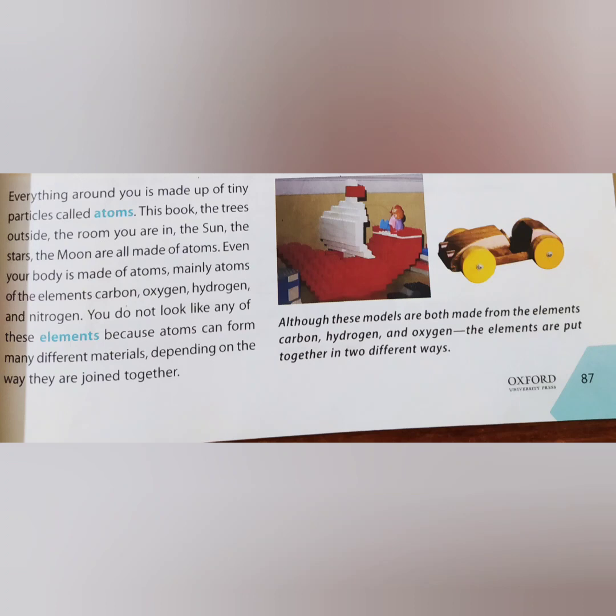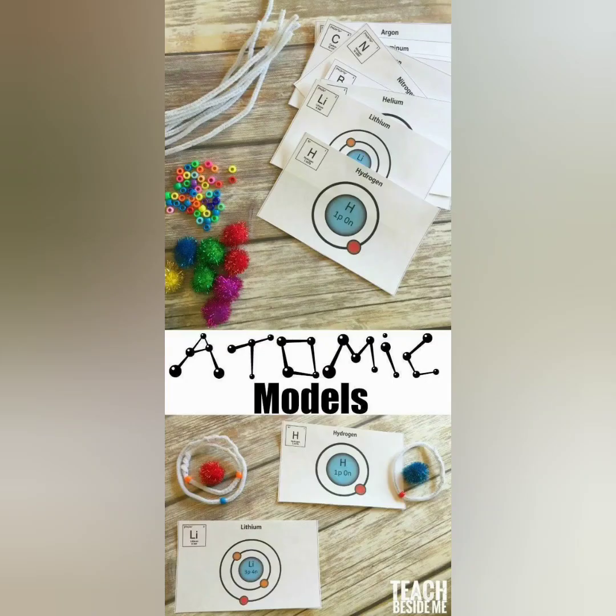This book, the room you are in, the sun, moon, earth, your body — all are made of atoms. But atoms are not all the same; they are of different types, and these different types are called elements.